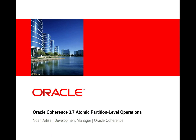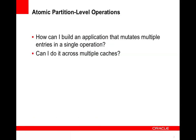Hi, my name is Noah Arliss, a Development Manager with Oracle Coherence, and today I'll be talking about atomic partition-level operations with the 3.7 release. When I refer to partition-level atomic operations, what I'm really referring to is the ability or desire to modify entries in a cache atomically. Out of the box, entry processors provide this functionality for a single entry at a time. But what happens if I want to build an application that wants to modify multiple entries in a single operation?